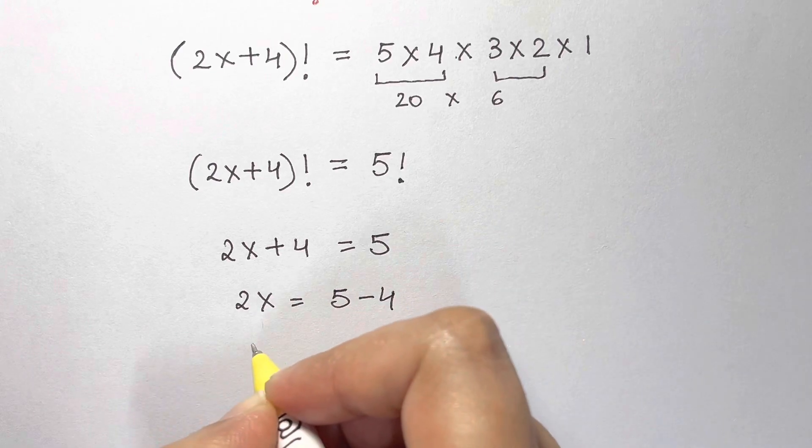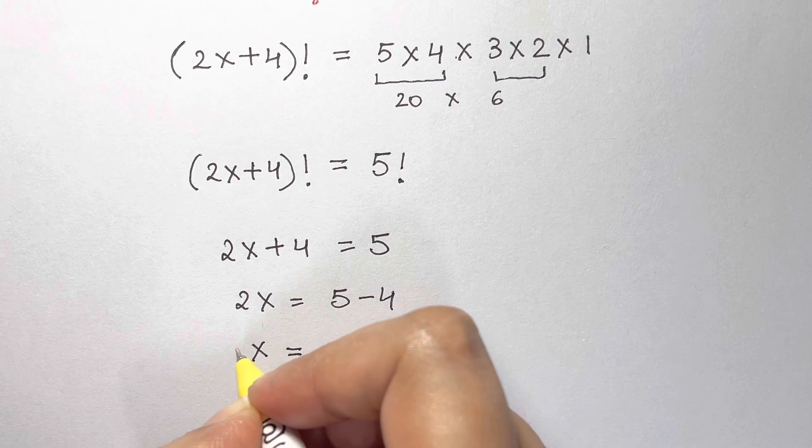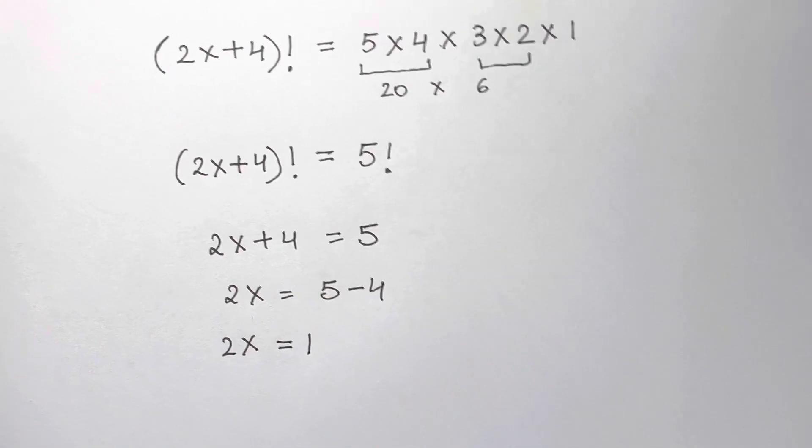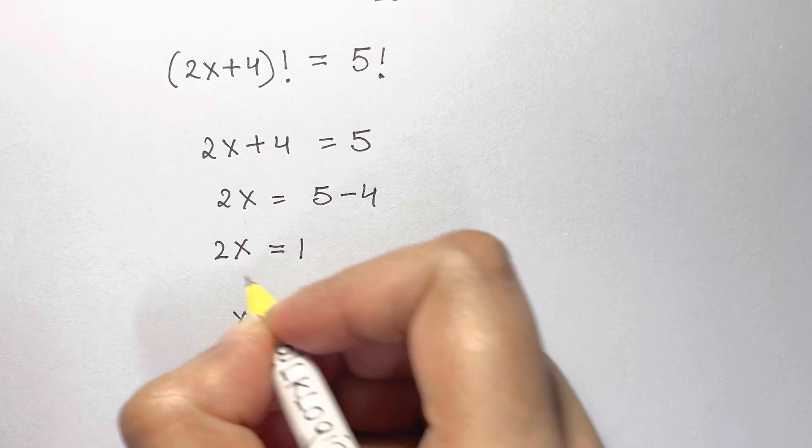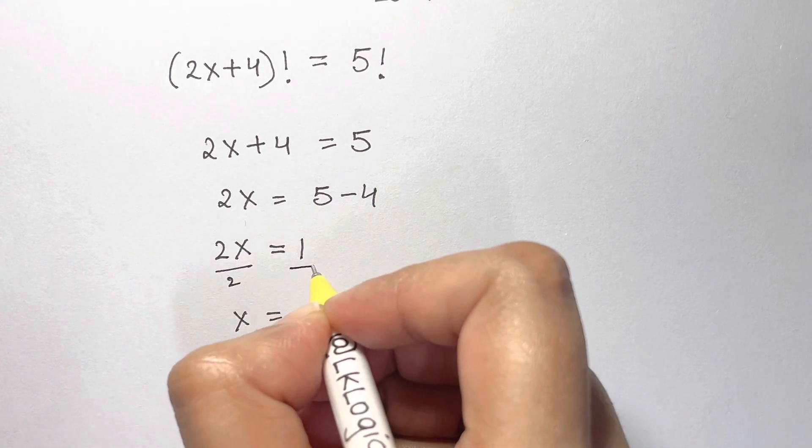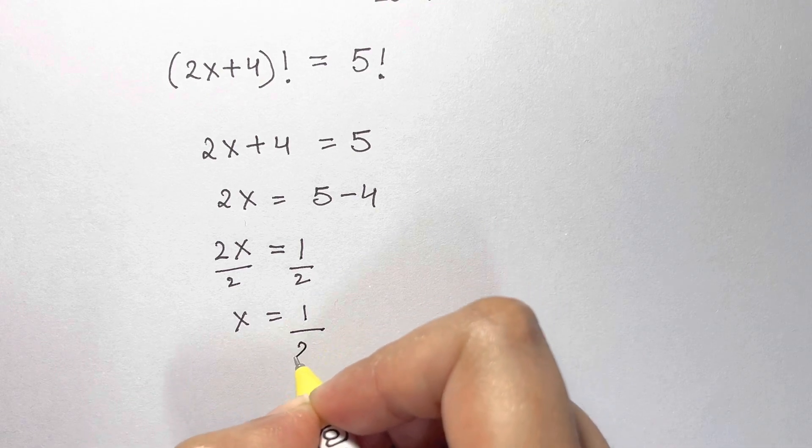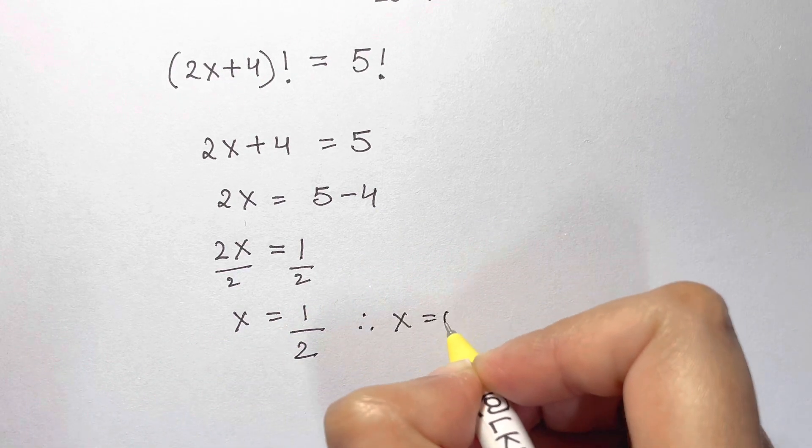2x = 1. x = 1/2. Divide both sides by 2, so x = 1/2. Therefore x = 0.5.